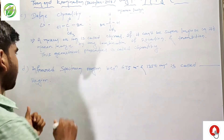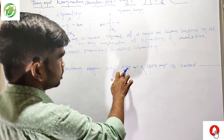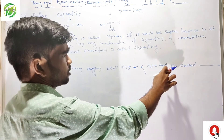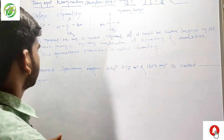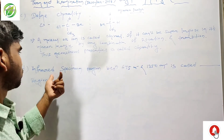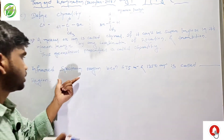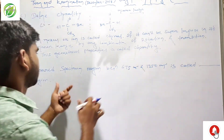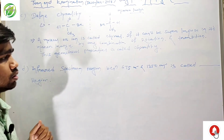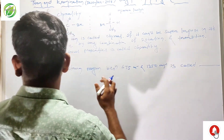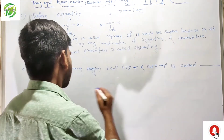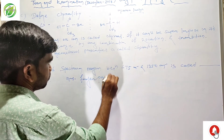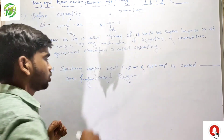The next one is the infrared spectral region between 675 and 1250 wavenumbers. This region is called the fingerprint region. This question is related to spectroscopy. The answer is the fingerprint region.